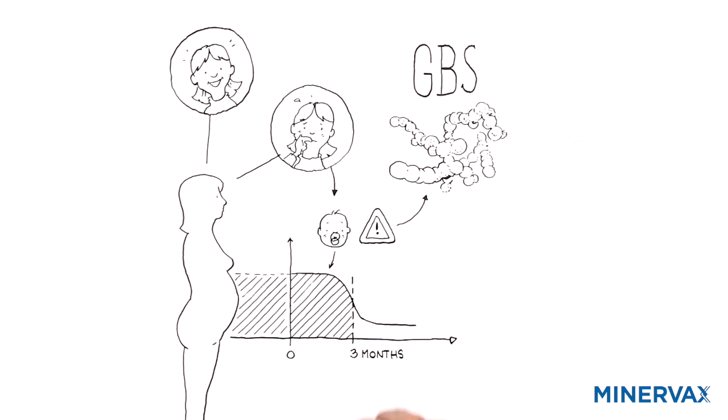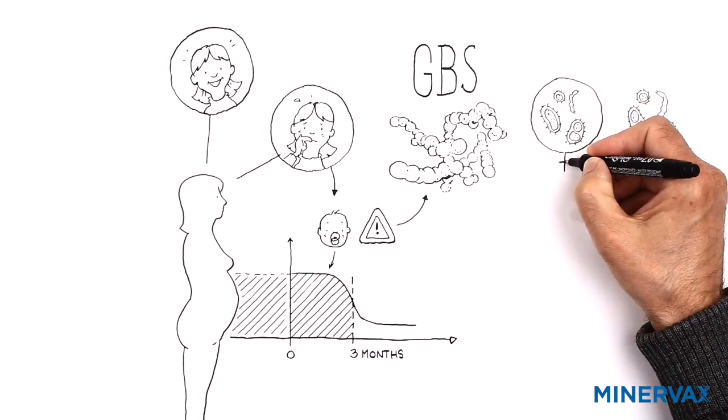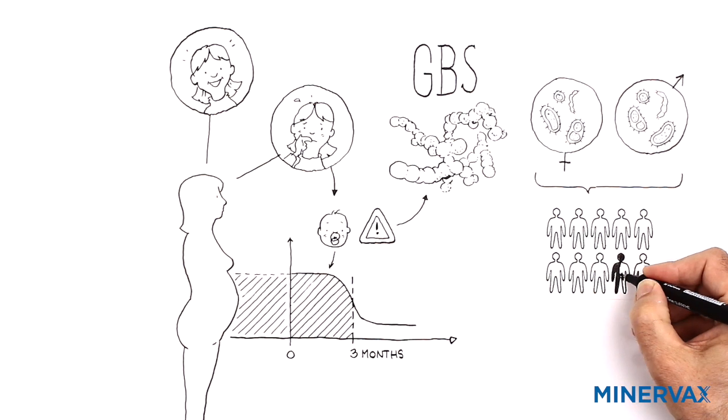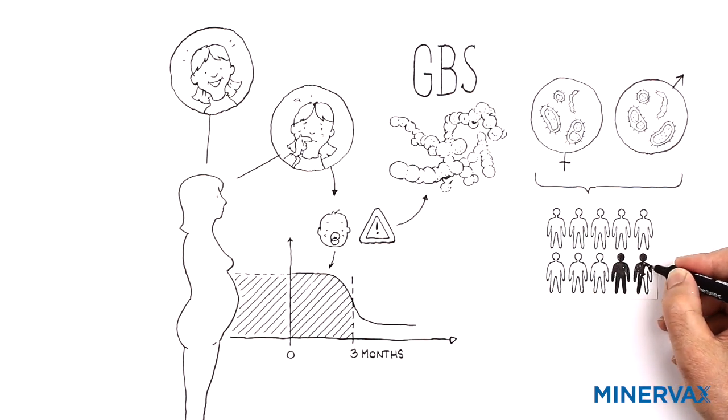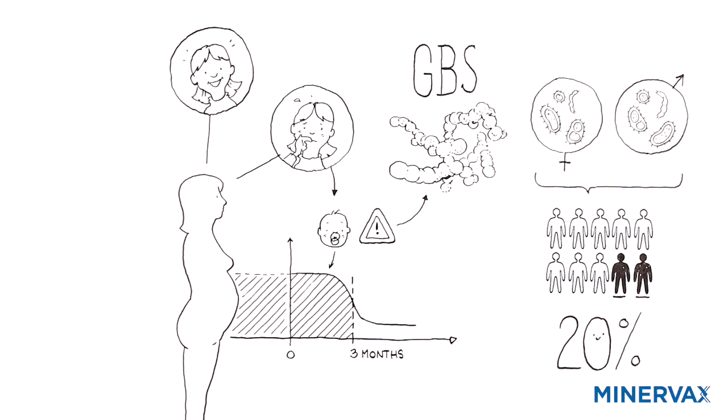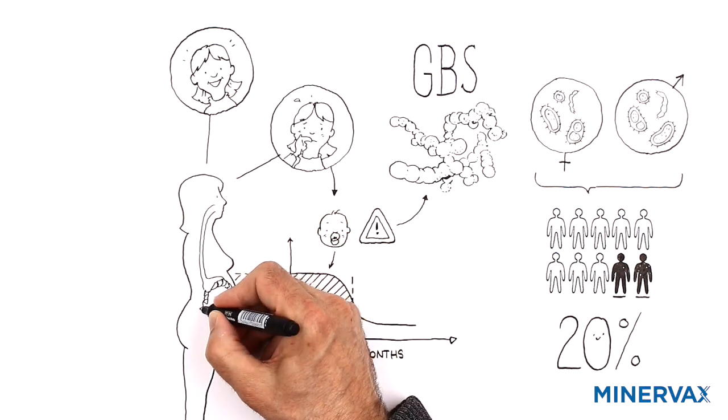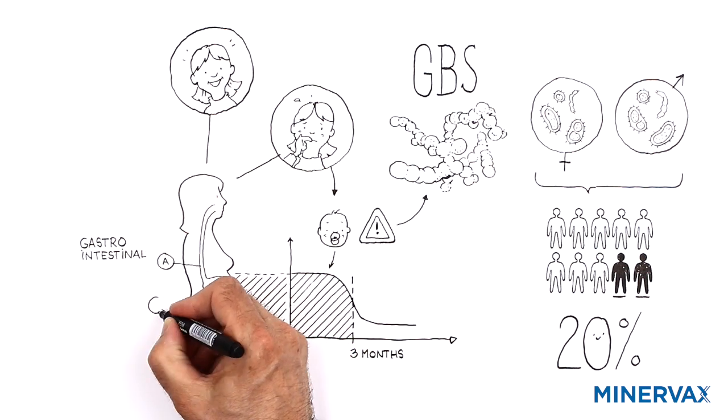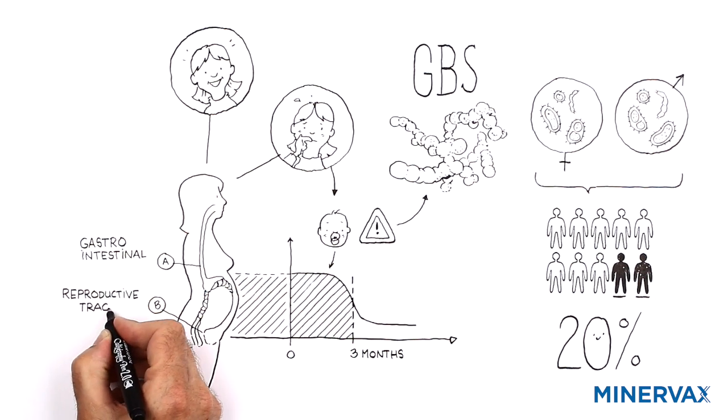For many, GBS are part of their normal bacterial flora, and it occurs in both women and men. Up to 20% of individuals carry these bacteria without necessarily having any problems. The bacteria are found in the gastrointestinal tract and, as a consequence, often also in the reproductive tract.